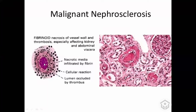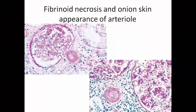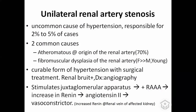You can see fibrinoid necrosis of the media and thrombus in the lumen. Looking at the kidney, the glomerulus and arteriole show necrosis of the media and clot formation. Sometimes they develop an onion-skin appearance, which can be seen in malignant arteriosclerosis.